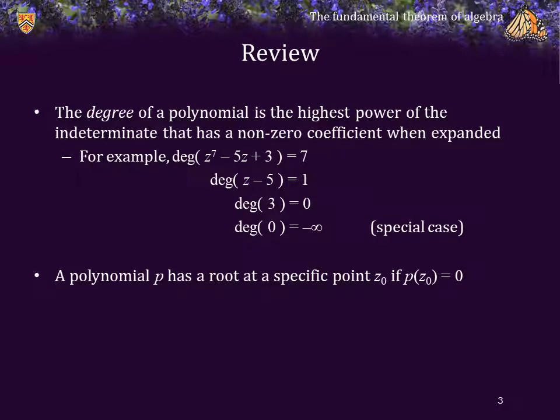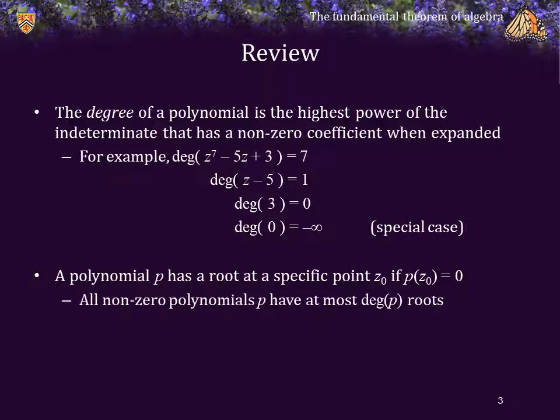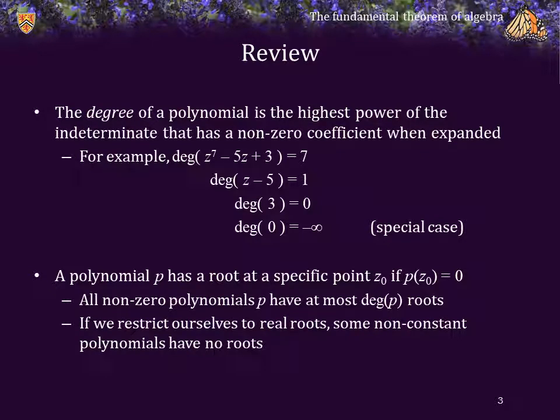A polynomial P has a root at a specific point z0 if P evaluated at that point is equal to 0. All non-zero polynomials P have at most degree of P roots. For example, that first polynomial has at most 7 roots. If we restrict ourselves to looking only at real roots, some non-constant polynomials may actually have no roots. For example, z squared plus 1 and z to the 4th minus 3z cubed plus 4z squared minus z plus 2 are two polynomials that have no real roots.